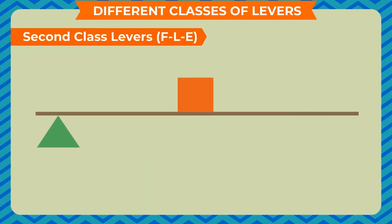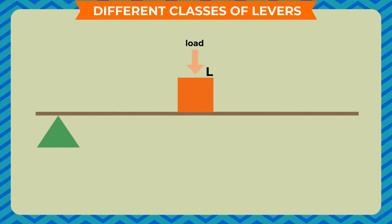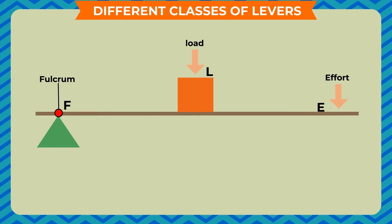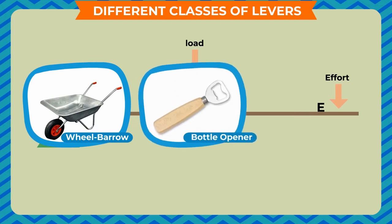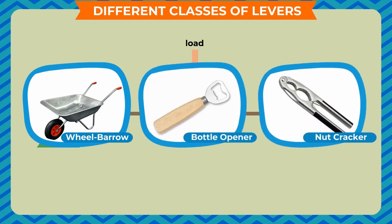Second class levers (F-L-E): In second class levers, the load L is located between the fulcrum F and the effort E. Here, the fulcrum F is at one end of the lever and the effort E is applied at the other end. Examples of second class levers are wheelbarrow, bottle opener, nutcracker, etc.